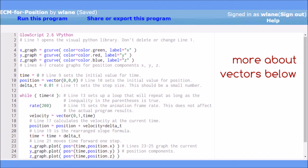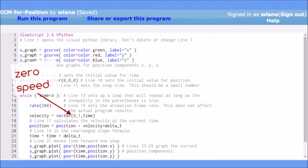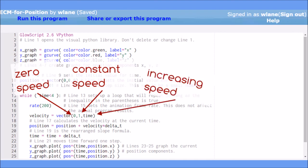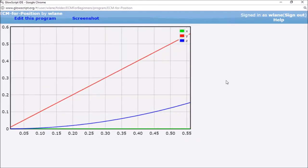In the first scenario we'll look at, we've set the speed in the x direction to be zero, we've set the speed in the y direction to be constant, and we've set the speed in the z direction to increase with time. Let's run the code and see how our position changes with this expression for velocity.